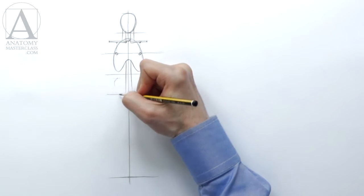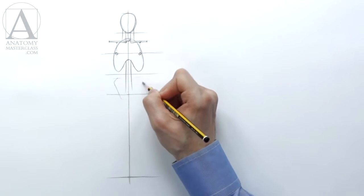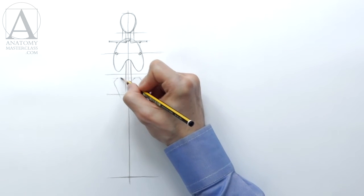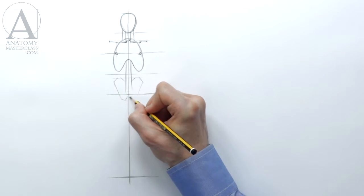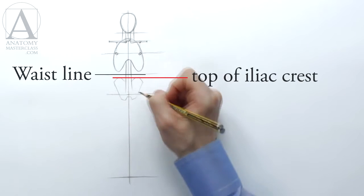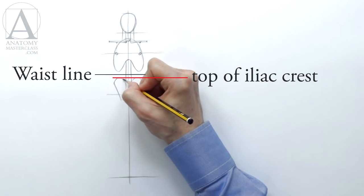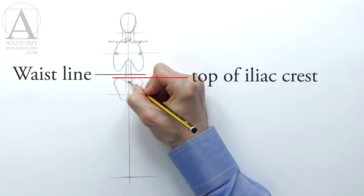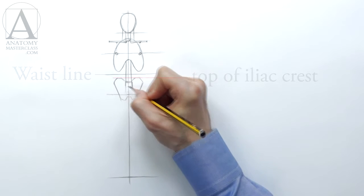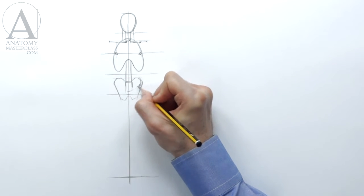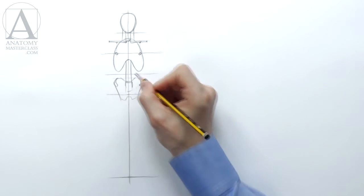The spine runs along the medial line. I will outline the pelvis here. The upper border of the pelvis, or top of the iliac crest, is located slightly below the waistline. Later, you will see a separate video lesson on pelvic anatomy, so we will skip it for now.